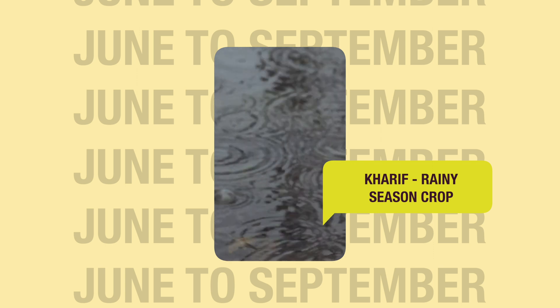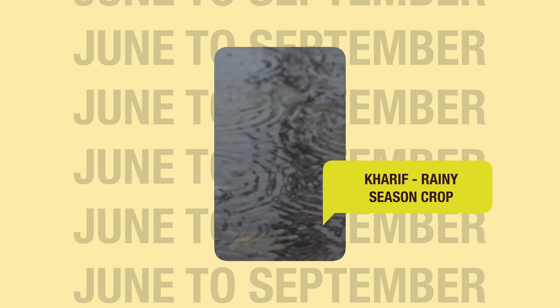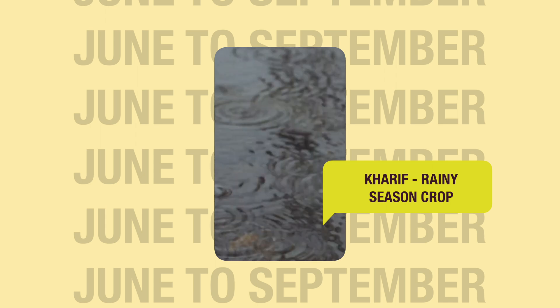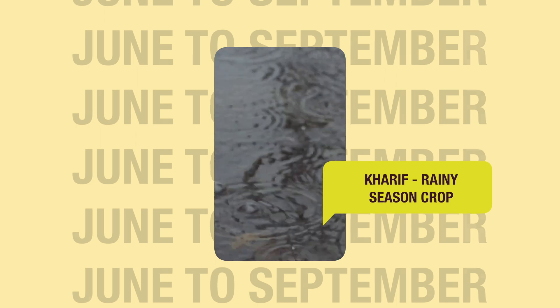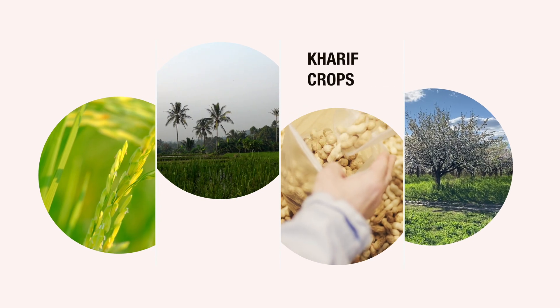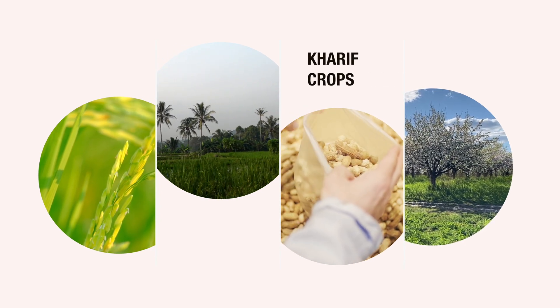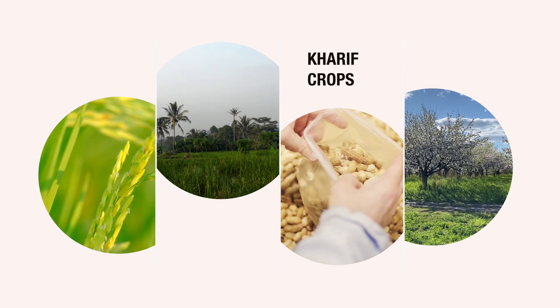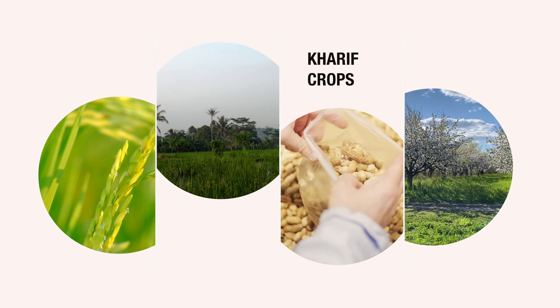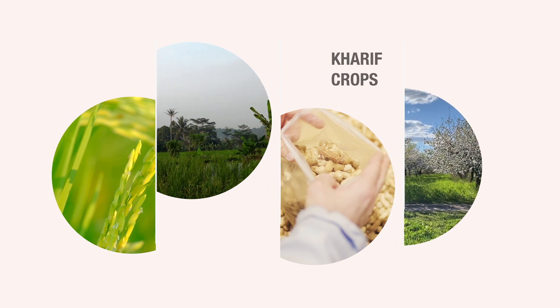The first is Kharif. These Kharif crops are sown in the rainy season, and in India this is typically from June to September. These crops include paddy, maize, soya bean, groundnut, cotton, etc.